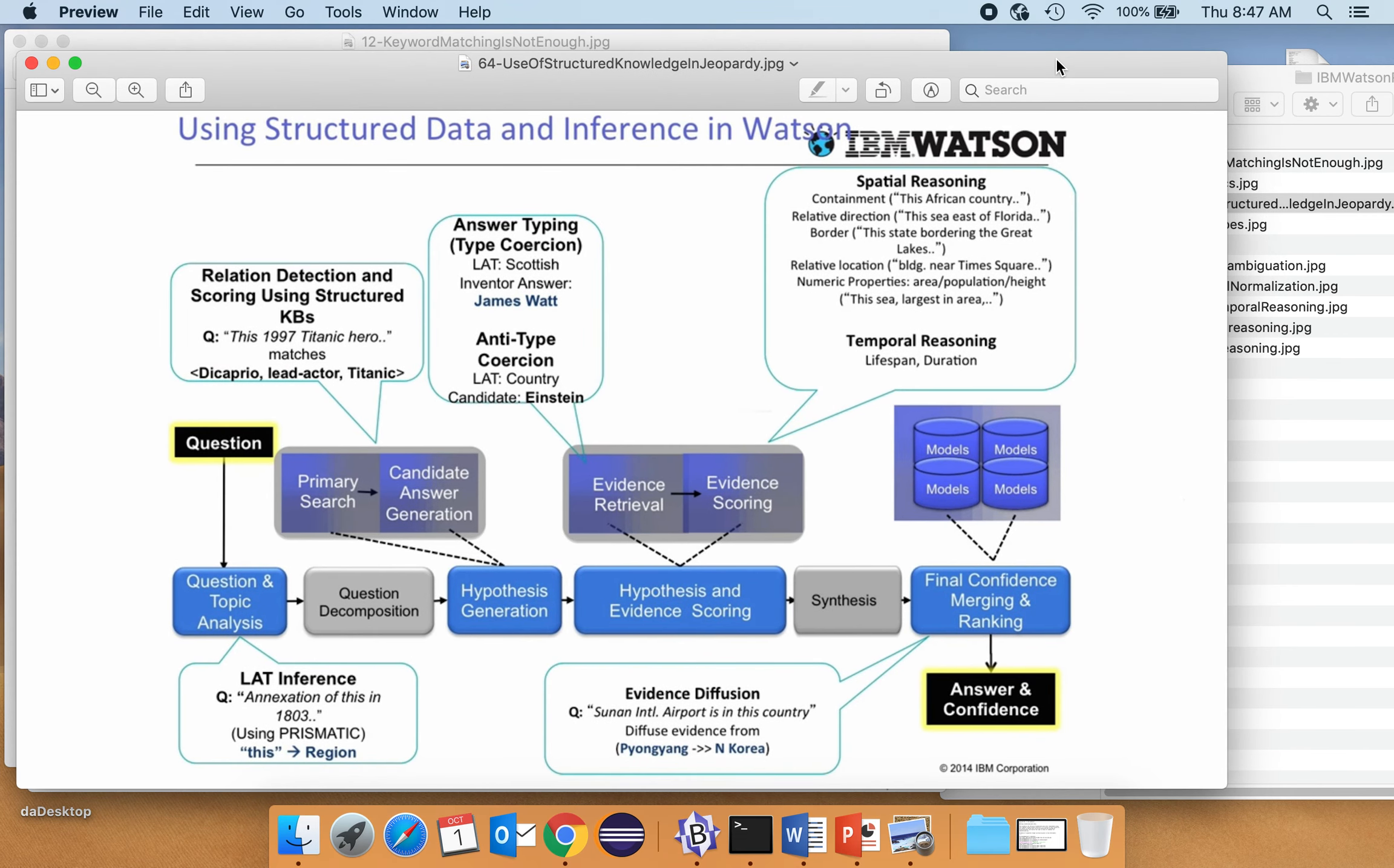So where do we use all this stuff? Spatial reasoning: containment, African country, relative direction to the east, bordering, relative location near, numeric property area, population, height. And so they use that, they also use temporal reasoning, lifespan duration, and they do that as part of evidence scoring. So that's where we use this thing. We'll talk a little bit about type coercion here in a moment.